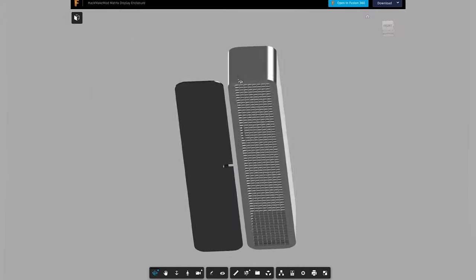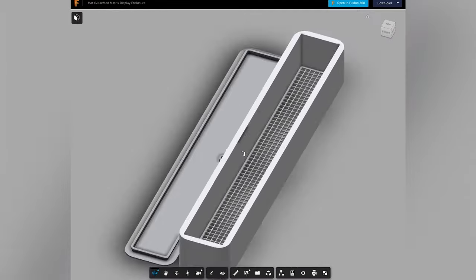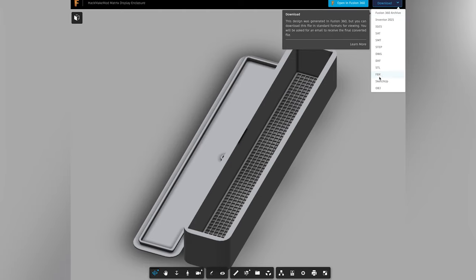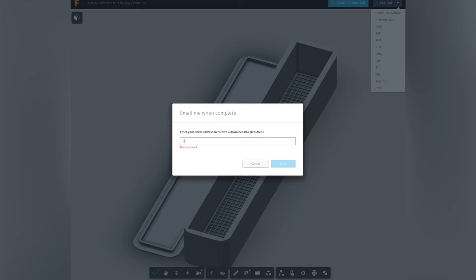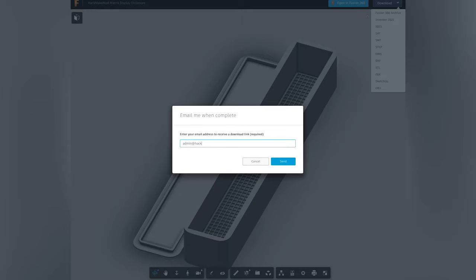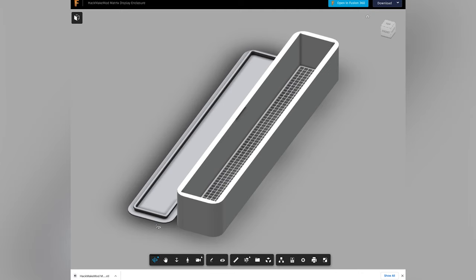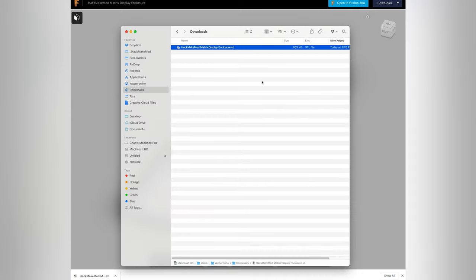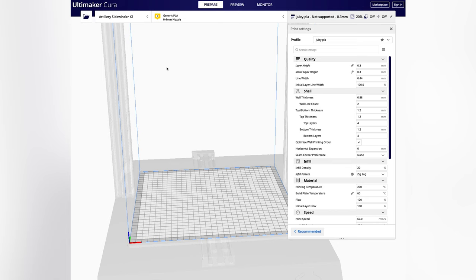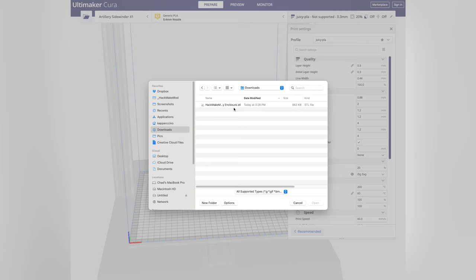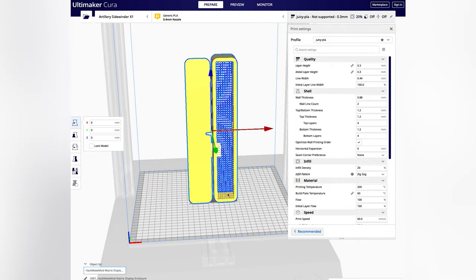And you can see that's the two models. You got the back cover and the case itself. And you can look at it, zoom around, check it out. But then what you do is you go up to download, drop that down and it gives you whatever file you prefer to use. Most people use STLs for their 3D printer. You click that and you put in your email. So then it'll export it and email you the file. Then you open up the email, download the file, and then go into your slicer. I use Ultimaker Cura. Bring the file into the slicer. Put the face down.